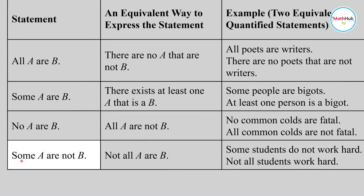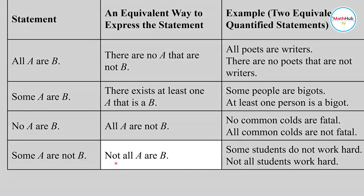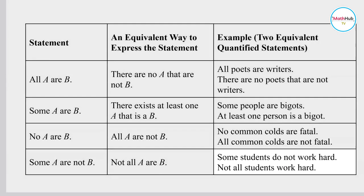Then we have the statement 'Some A are not B.' This is equivalent to 'Not all A are B.' For example, 'Some students do not work hard' is a statement in the 'Some A are not B' format, and its equivalent is 'Not all students work hard.'